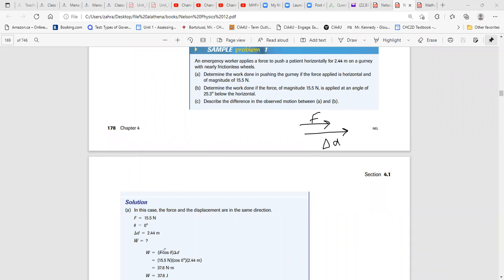Knowing the equation, force is 15.5, theta is 0, cosine of 0 is 1, delta d displacement is 2.44. So you can find the work done too.